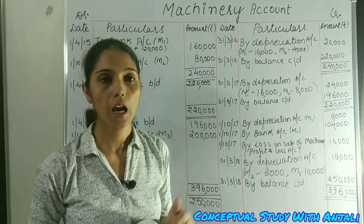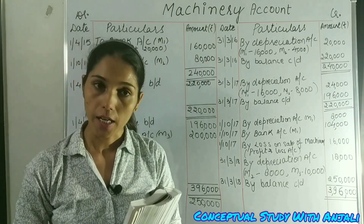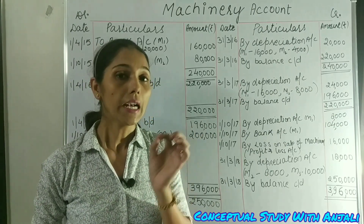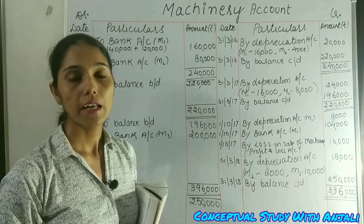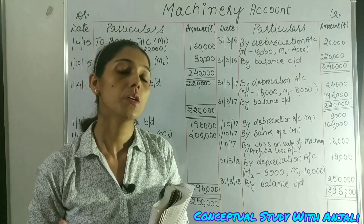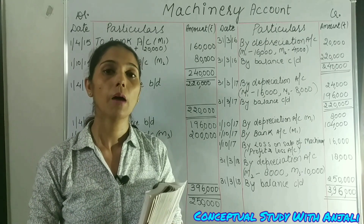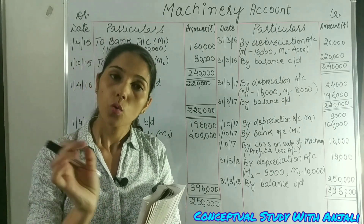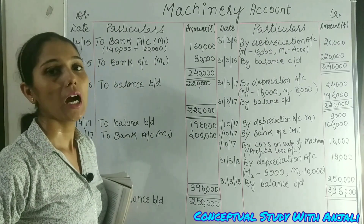The next entry talks about 2017, so first we need to charge depreciation for the current year. Depreciation is shown on the credit side because it reduces the value of our machinery. We charge it at year end — 31st March — when the accounting year closes. So on 31st March 2016, by depreciation account: Machine 1 depreciation is 10% of 1,60,000 for a full year = Rs. 16,000. Machine 2 depreciation is 10% of 80,000 for 6 months = Rs. 4,000. Total depreciation = Rs. 20,000.